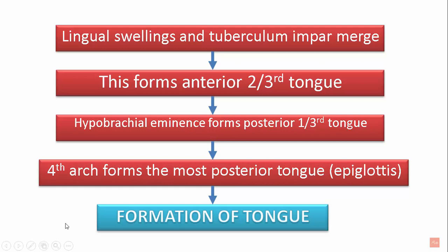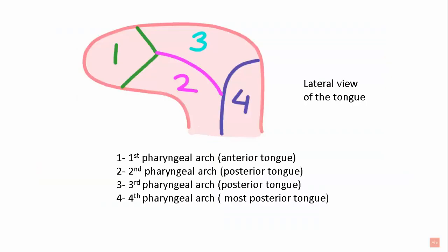This forms the mucous membrane of the tongue. The muscles of the tongue arise from the occipital somites and carry the nerve supply via the twelfth cranial nerve — the hypoglossal nerve. In the lateral view of the tongue, the anterior portion is formed by the first pharyngeal arch, the posterior one-third is formed by the second and third pharyngeal arches, and the most posterior part — the epiglottis — is formed by the fourth pharyngeal arch.